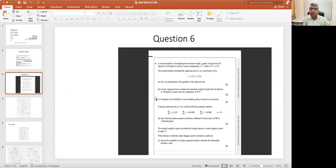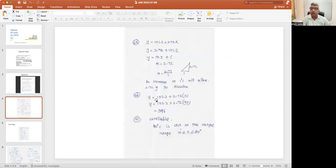Question 6B: Use the regression line to estimate the maximum weight of sugar that will dissolve in 100 grams of water when the temperature is 90 degrees. They have given the range, so y equals 151.2 plus 2.72 times x. In place of x you substitute 90 degrees, so it will be 396.